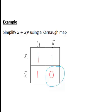And what does that zero represent? Well, it's in the column for Y bar and it's in the row for X bar, so therefore our simplified expression just becomes X bar and Y bar, or X bar Y bar in this case.